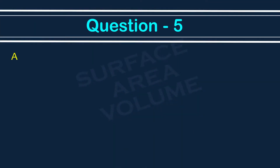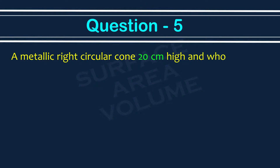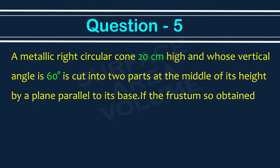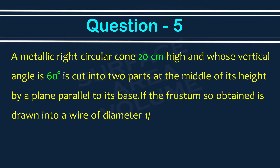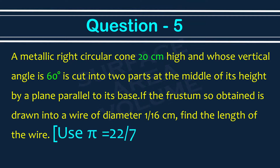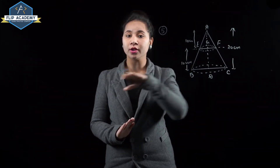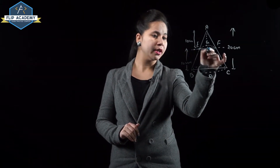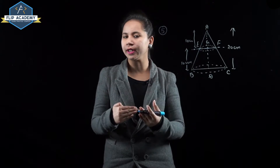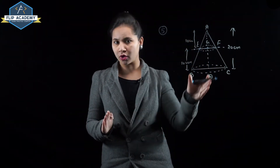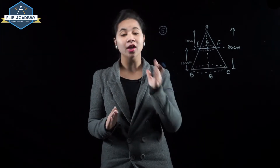Surface area and volume, Exercise 13.4, Question number 5. A metallic right circular cone 20 centimeter high, whose vertical angle is 60 degree, is cut into two parts at the middle of its height by a plane parallel to its base. The frustum so obtained is drawn into a wire of diameter 1 upon 16 centimeter. Find the length of the wire. Use pi equal to 22 upon 7.